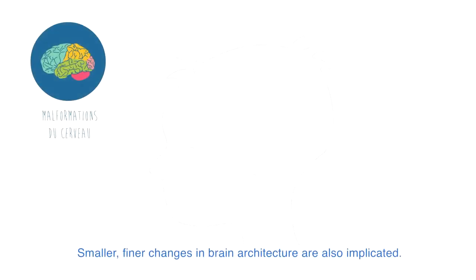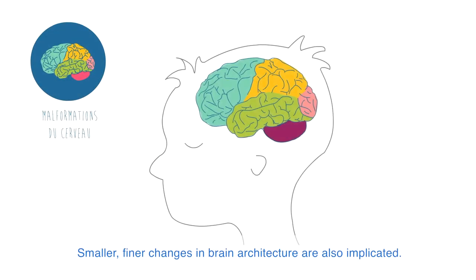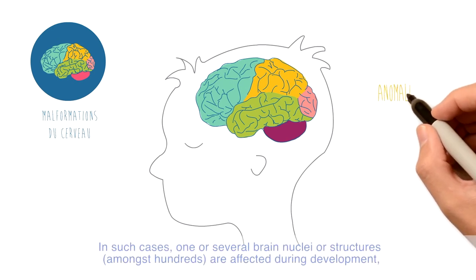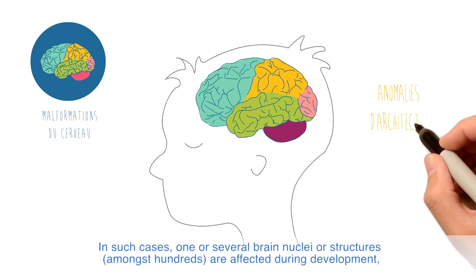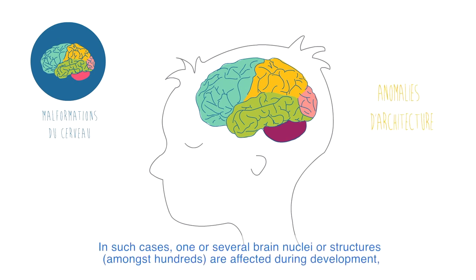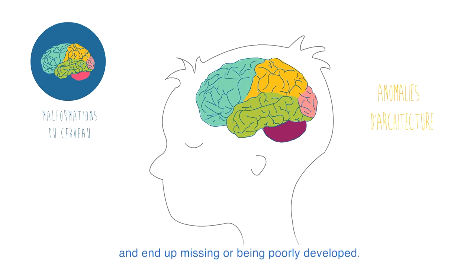Smaller, finer changes in brain architecture are also implicated. In such cases, one or several brain nuclei or structures, amongst hundreds, are affected during development and end up missing or being poorly developed.